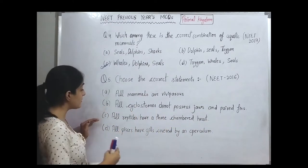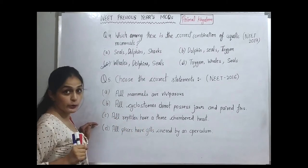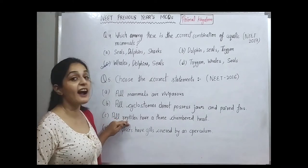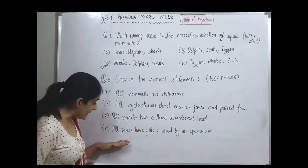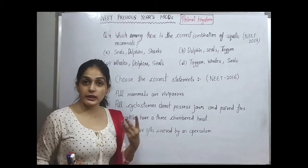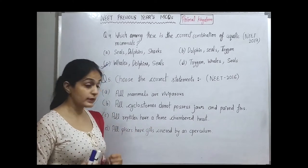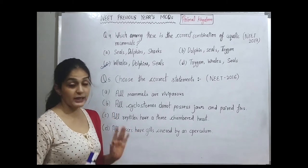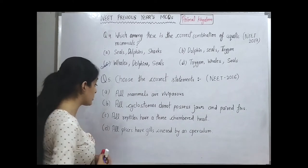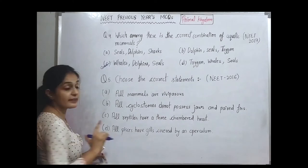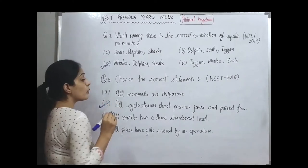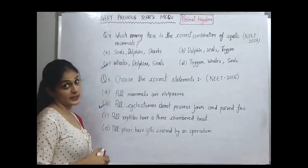The next statement says all reptiles have a three-chambered heart — but one reptile has a four-chambered heart, so this statement is not fully correct. Statement D says all fishes have gills covered by an operculum. However, we have two types of fishes: cartilaginous and bony. Cartilaginous fishes do not have gills covered by an operculum — their gill slits are separate. So statement D is incorrect. The most correct statement is that cyclostomes lack jaws and paired fins.